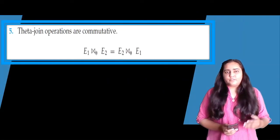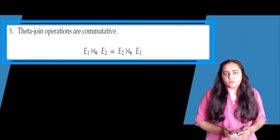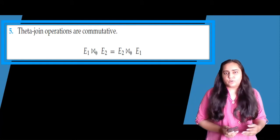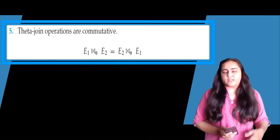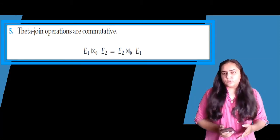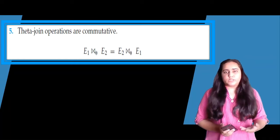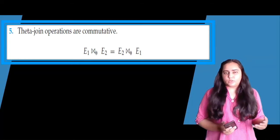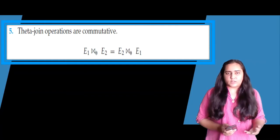The fifth rule is that theta join operations are also commutative. If you have E1 theta-joined with E2, you can also perform E2 theta-joined with E1 and still get the same result.